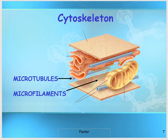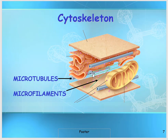The next organelle we're going to talk about is the cytoskeleton. You can see it is similar to the skeleton of our body. There are two components in the cytoskeleton: one is the microtubules — you can see these tubes — which are made up of a protein called tubulin. The second component is these green lines, which are made up of actin protein.